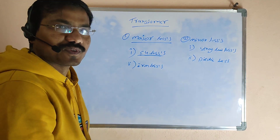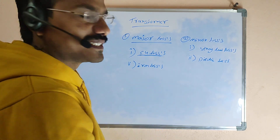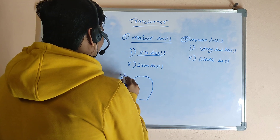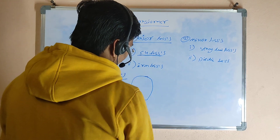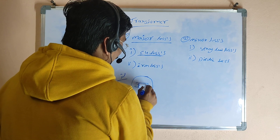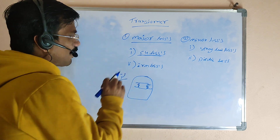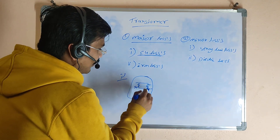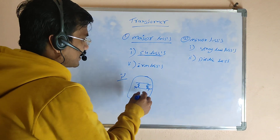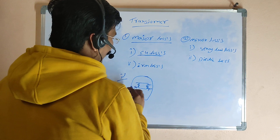The copper losses take place on the transformer windings — either the primary winding or the secondary winding. The losses take place on that winding area.